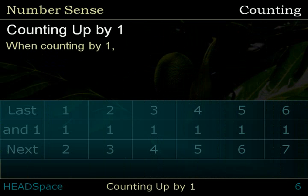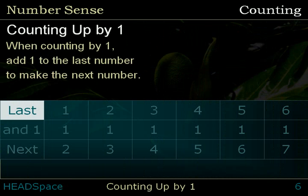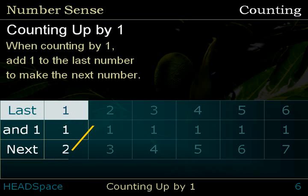When counting by one, add one to the last number to make the next number. Last number: 1. And one. Next number: 0, 1, 2.